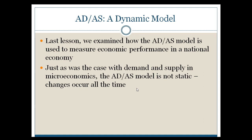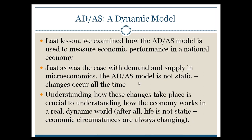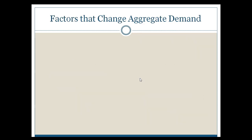Those scenarios can all emerge at different points in time. The reason you may not be where you want to be is that both aggregate demand and aggregate supply, even when you get them into an ideal spot, they move. We're going to look at why those factors move in a real dynamic world, what causes them to move, and what the policy implications of that information are.